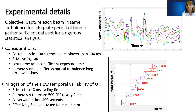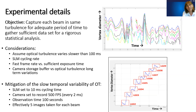The most important experimental detail is that we capture each beam in the same turbulence for an adequate period of time to gather a sufficient data set for rigorous statistical analysis. The top image clearly shows that as we progress in time, the optical turbulence changes significantly, but since we use rapid data collection, each beam is exposed to the same turbulence and fluctuates accordingly. We assume that optical turbulence varies on the order of 100 milliseconds. We are also concerned about how fast our SLM can cycle the beams and the camera exposure time required to give sufficient light for processing, as well as the camera buffer for long-period turbulence observation.